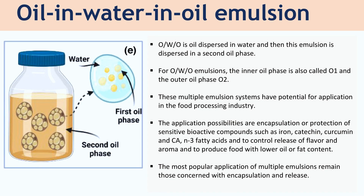Then let's see what is oil-in-water-in-oil emulsion. Oil-in-water-in-oil emulsion is oil dispersed in water, and then this emulsion is dispersed in a second oil phase. The inner oil phase is called O1 and the outer oil phase is O2.